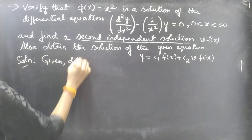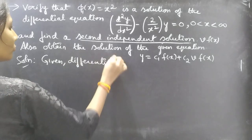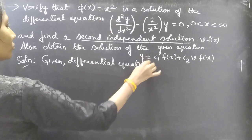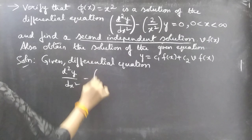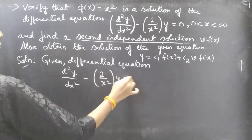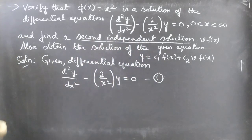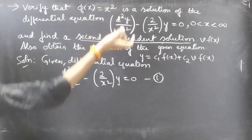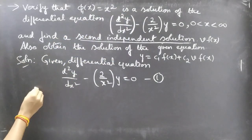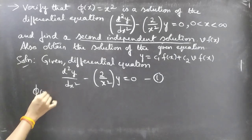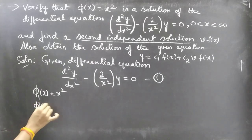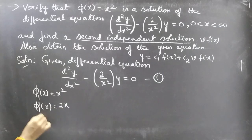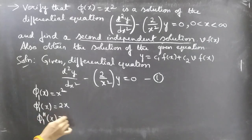The given differential equation is d²y/dx² − (2/x²)y = 0 — consider this as equation number 1. Now we are going to verify that φ₁(x) = x² is the solution of this equation. So let φ₁(x) = x². Then φ₁'(x) = 2x and φ₁''(x) = 2.